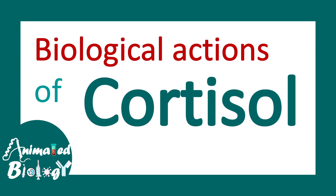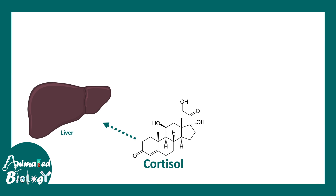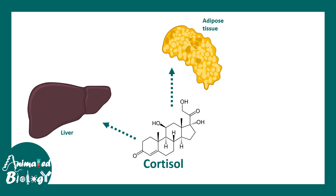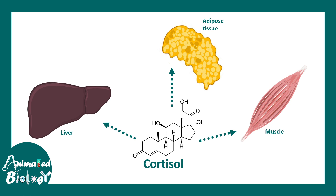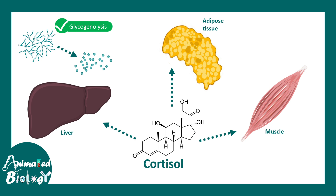Cortisol acts on different organs, especially the liver, which is the metabolic hub. This tells us that cortisol is really important for various aspects of metabolism. It also acts on adipose tissue, muscles, and other highly metabolically active tissues. In the liver, it breaks down glycogen to make glucose — it ensures glycogenolysis happens and glucose levels increase. It also prevents glycogenesis, meaning it prevents glucose from being converted back into glycogen.